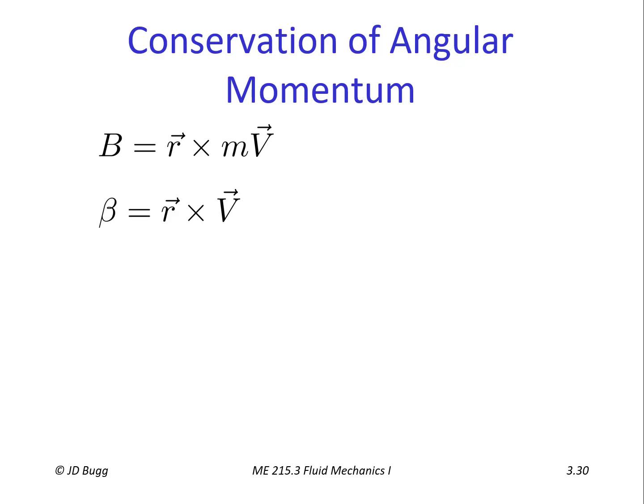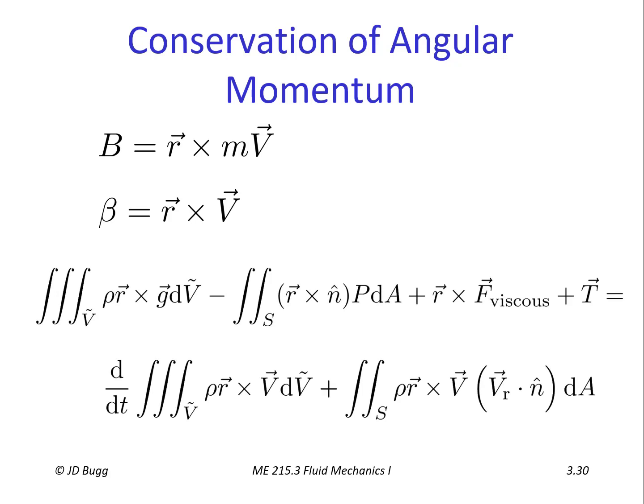Substituting into Reynolds Transport Theorem gives us this result, which is the final form of the general equation for conservation of angular momentum.